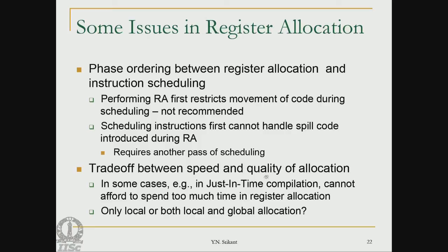There is a trade-off between speed and quality of allocation, whether at compile time or run time. In just-in-time compilation of Java, compile time produces the Java byte code, but during execution there is a machine code generation phase called JIT compilation to increase speed. In such cases, performing very complicated register allocation within the JIT compiler would require too much time and may not be justified.